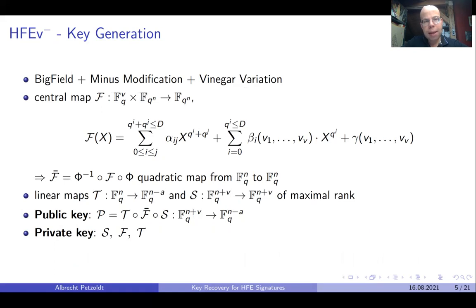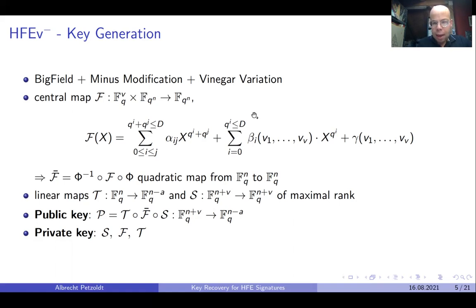An important example for such a big field signature scheme is the HFEv- signature scheme, which combines the idea of big field signature schemes with the minus modification and the vinegar variation. The central map f of the scheme is a map from F_q^v times the extension field F_q^n to F_q^n and has a special structure. The degree of the polynomial f(x) is bounded by big D, and we have linear maps beta_i in the so-called vinegar variables v1 to v_v and a quadratic map in the vinegar variables. Due to the special structure of this map and the Frobenius isomorphism, the map f-bar is a quadratic map over the vector space F_q^n.